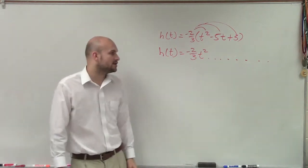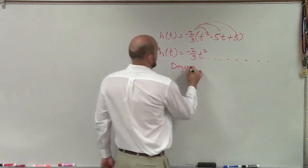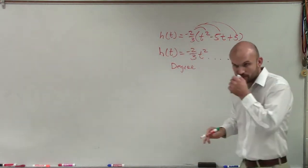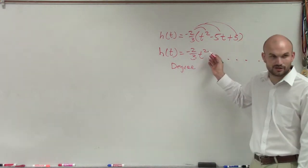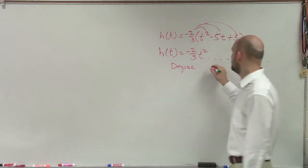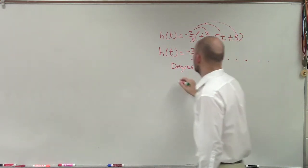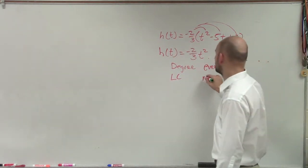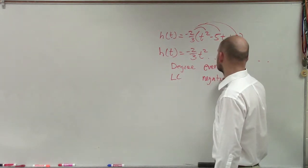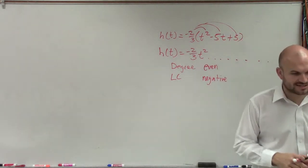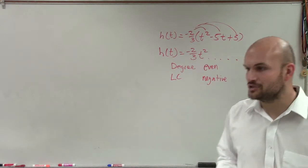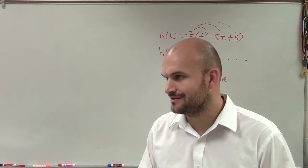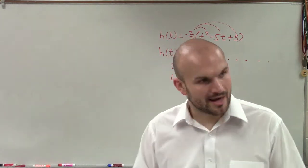When we look at that leading term, there's two things you need to write down. We need to know: is the degree going to be even or odd? And in this case, the degree is even. And then we need to look at the leading coefficient. Is that going to be positive or negative? And in this case, it is negative. Now, the shape of the most common even function - do you know the shape? A parabola.